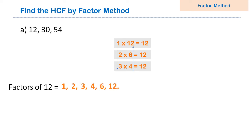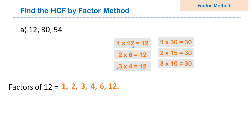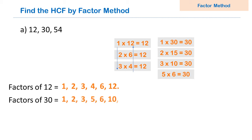Then we find all the factors of 30. We have to think of all possible combinations of 30. If listing factors, always start with 1 and the number itself. So 1 multiplied by 30 equals 30. Is 30 completely divisible by 2? Yes, 2 multiplied by 15 equals 30. Is 30 divisible by 3? Yes, 3 multiplied by 10 equals 30. Is 30 divisible by 4? No, so leave it. Is 30 divisible by 5? Yes, 5 multiplied by 6 equals 30. So the factors of 30 are: 1, 2, 3, 5, 6, 10, 15, and 30.